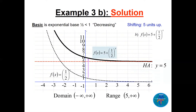For the second example, f(x) = 5 + (1/2)ˣ: the base is 1/2, so this is a decreasing function. The basic graph of (1/2)ˣ passes through (0, 1). Shifting up 5 units moves that point to (0, 6), and the horizontal asymptote moves from y = 0 to y = 5. The domain is all real numbers and the range is (5, ∞).